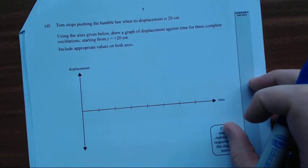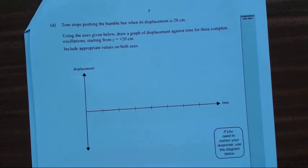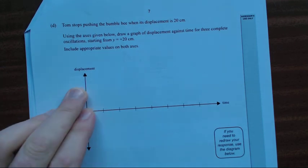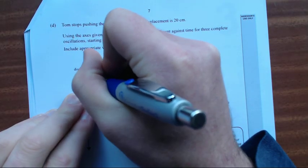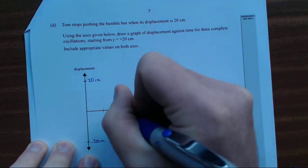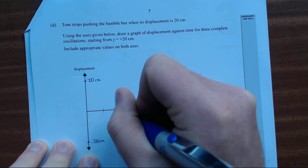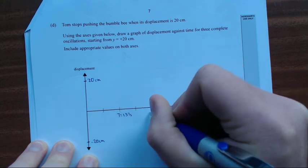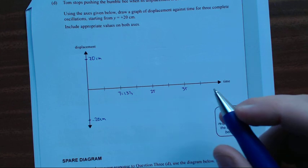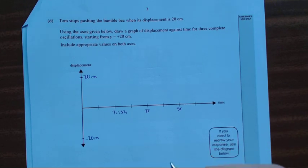So Tom stops pushing the bumblebee when its displacement is 20 centimeters. Draw a graph of the displacement against time for three complete oscillations starting from y equals positive 20 centimeters. Include appropriate values on both axes. First and foremost, it starts from positive 20 centimeters. I'll write my scale on here: 20 centimeters and negative 20 centimeters down here. I'll make this t equals 1.57 seconds, this is going to be 2T, this is going to be 3T.